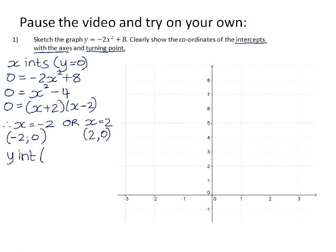The y-intercept on any graph is the value when x is equal to 0. So we're now going to substitute 0 in place of x to solve for y. And that gives us the point 0 and 8.